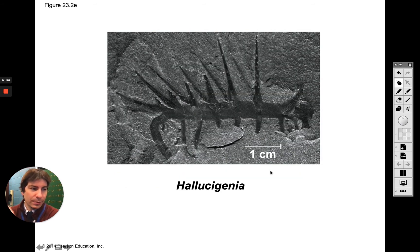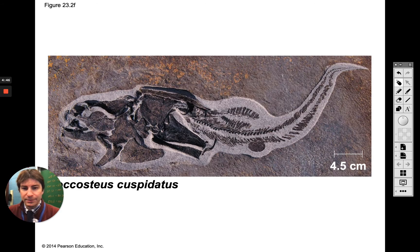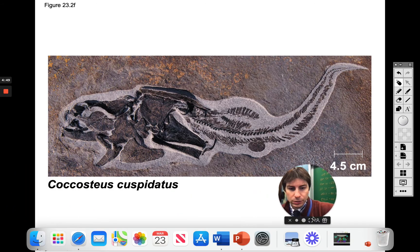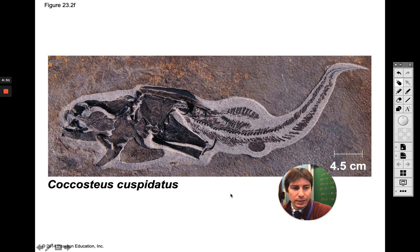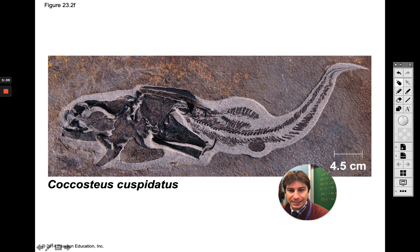Now we're going to get into some of our animal fossils. You can see this is probably more of a bony structure, and this one was about 500 million years ago. Now we're going to get into even more complex animals. This was around 400 million years ago — a fish-like vertebrate. You can see it kind of looks like a fish: there's a big tail here, a bony structure covering its head and front end, and then a whip-like tail. Starting to become more complex.